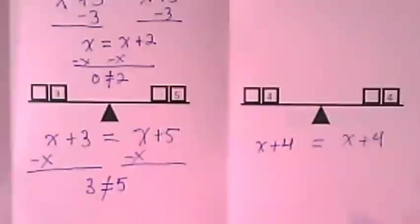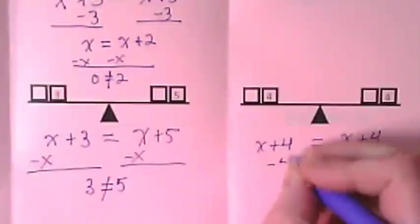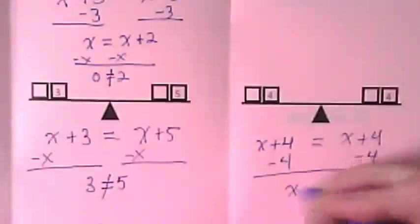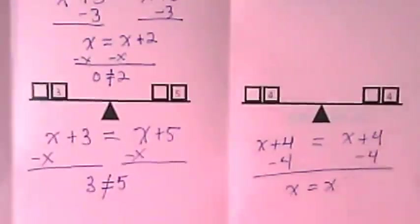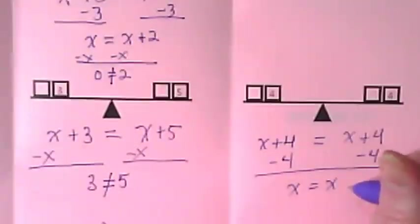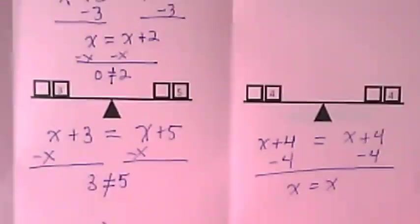Any number I put in here for X is going to make it true. Do you see that? But you don't always see them when you first get them on your page. So let's go through how to solve it. Typically we would probably do the minus 4 first, wouldn't we? X equals X. I really like that one because it's showing it doesn't matter what number I put in. Whatever I put in here I also have to put in here and it's going to be true.